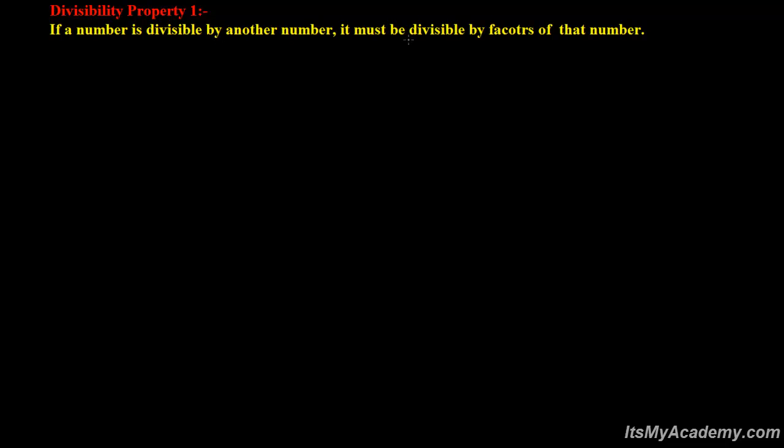The first divisibility property says something like this: if a number is divisible by another number, it must be divisible by the factors of that number also. There is a spelling error there — it should be 'factors.'